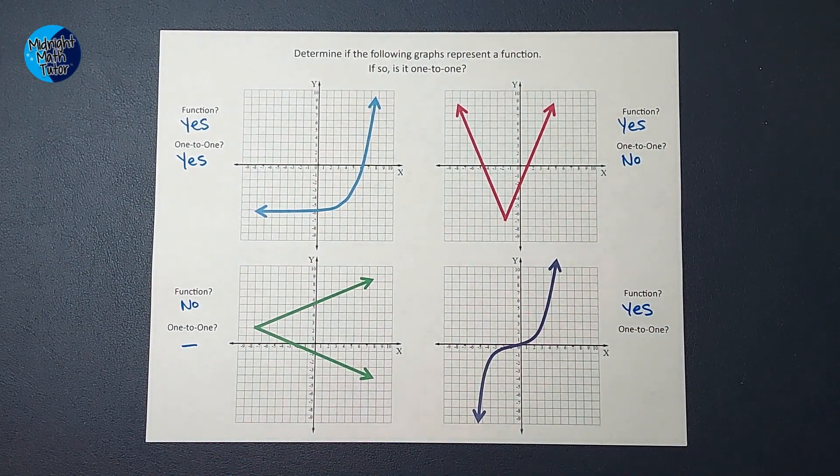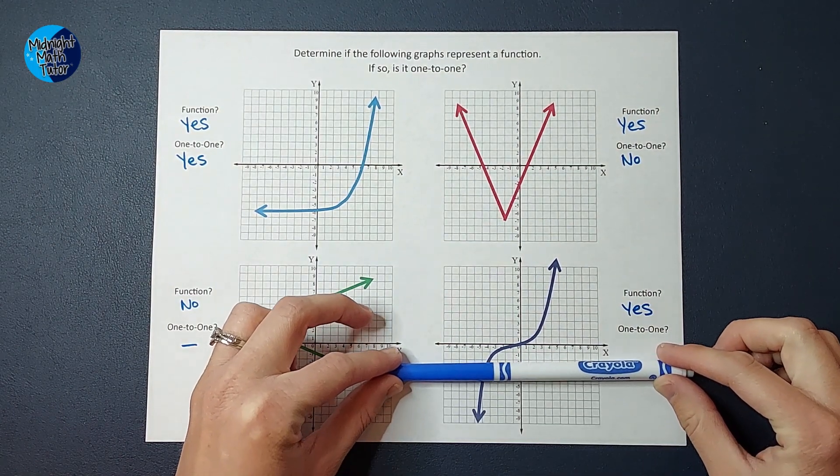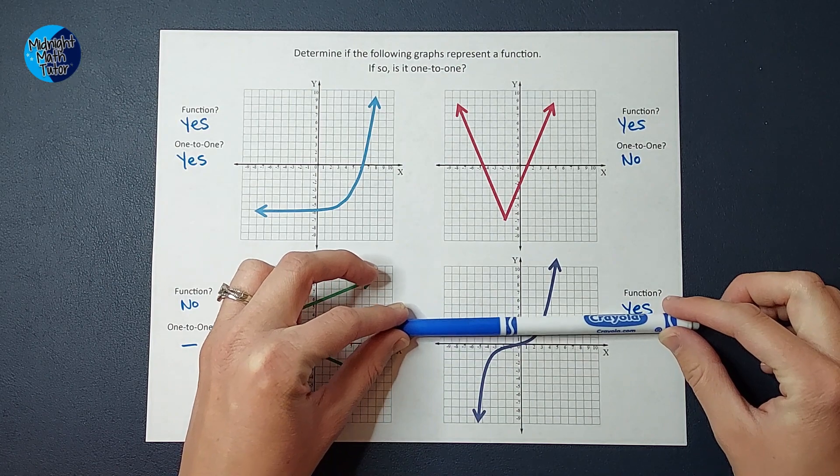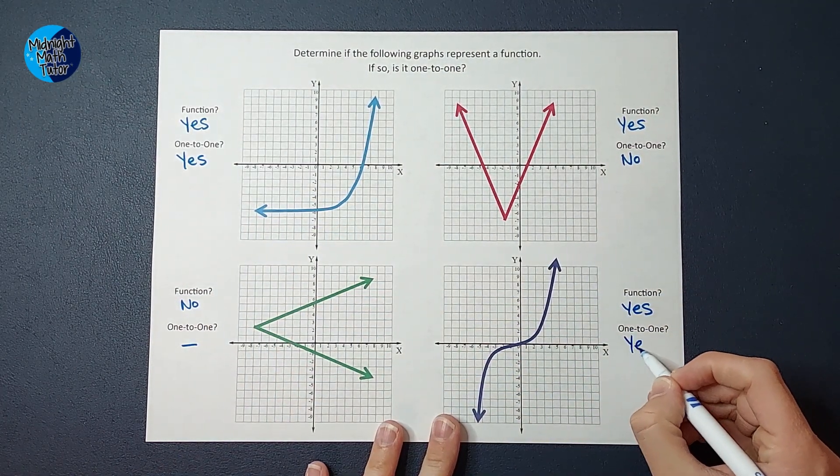Is it one-to-one? I'm going to do my horizontal line test, and I'm feeling pretty good about life right now. Yes, this one is one-to-one.